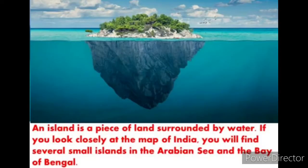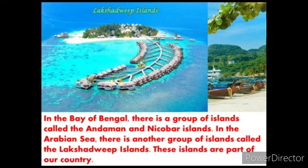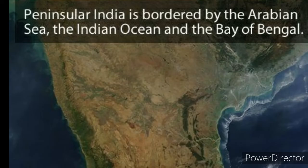An island is a piece of land surrounded by water on all sides. There are two islands in India: the Andaman and Nicobar Islands in the Bay of Bengal, and the Lakshadweep Islands in the Arabian Sea. A stretch of land surrounded by water on three sides is called a peninsula. The southern part of India is a peninsula, which is why India is also known as a peninsular country.